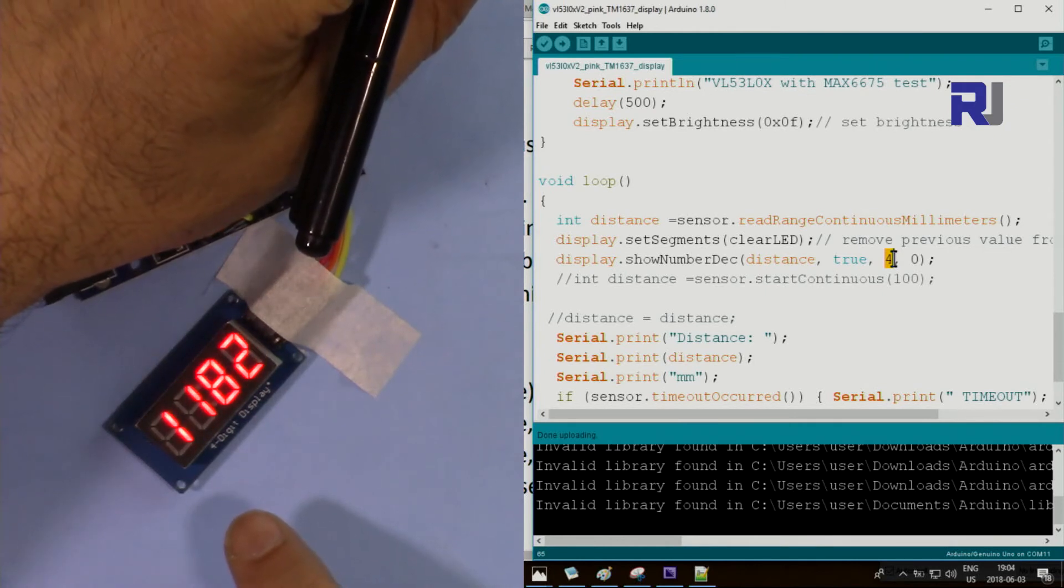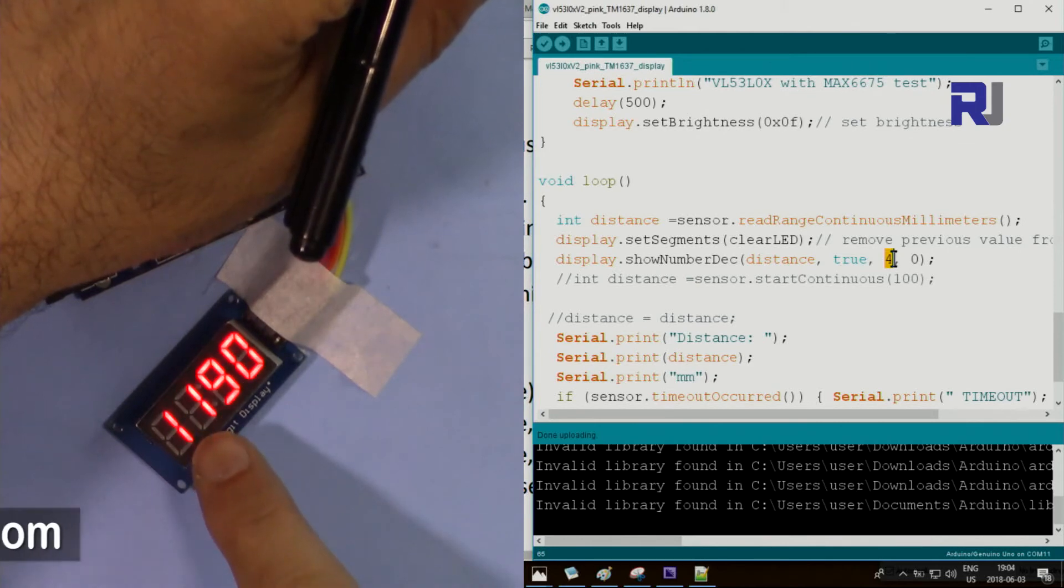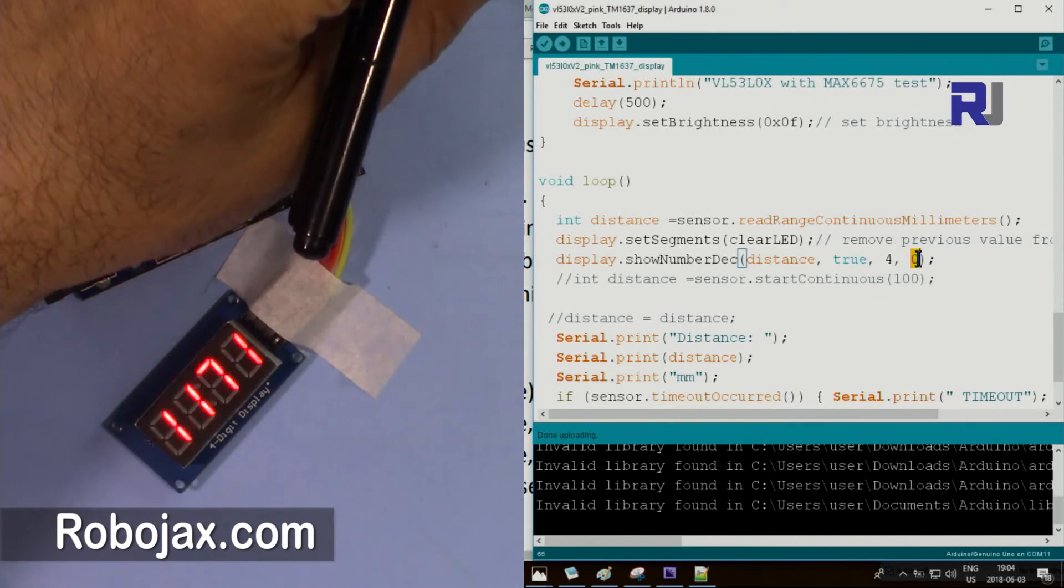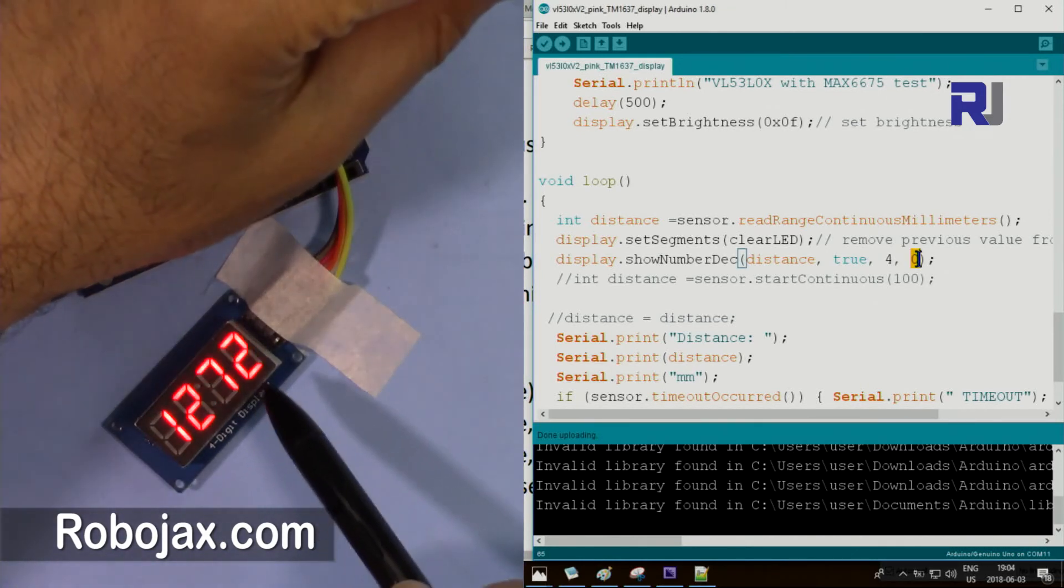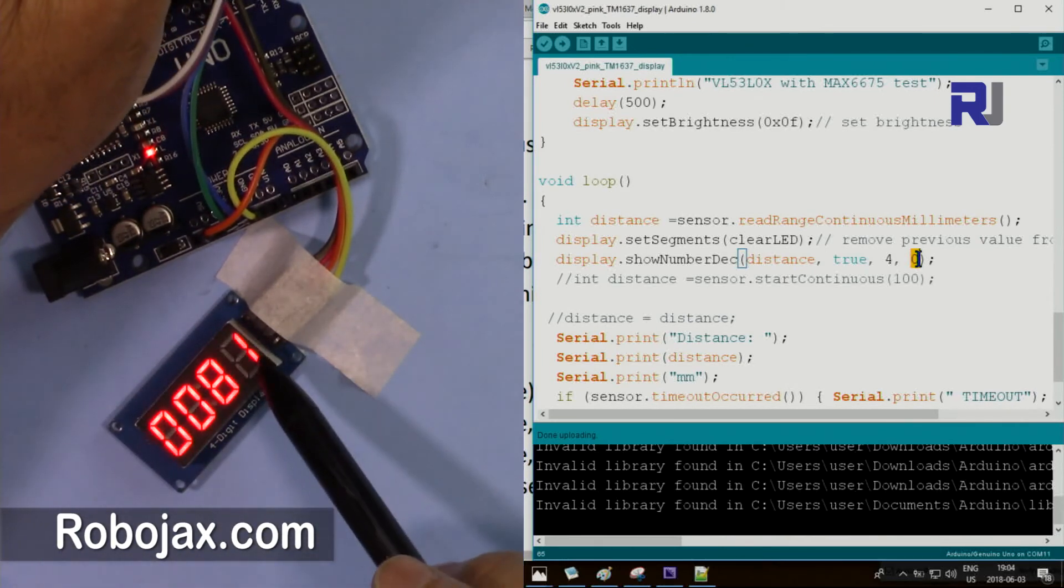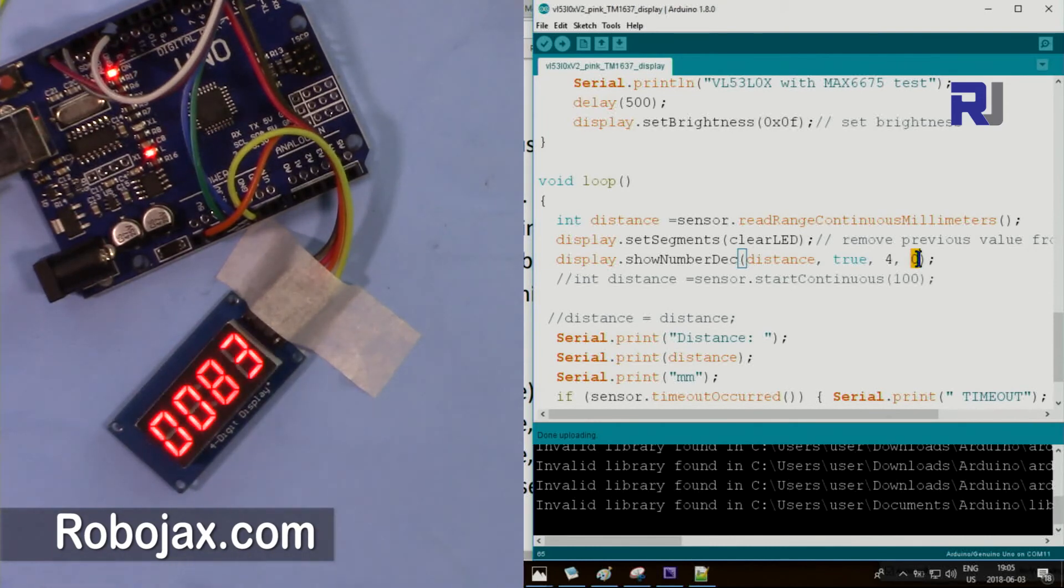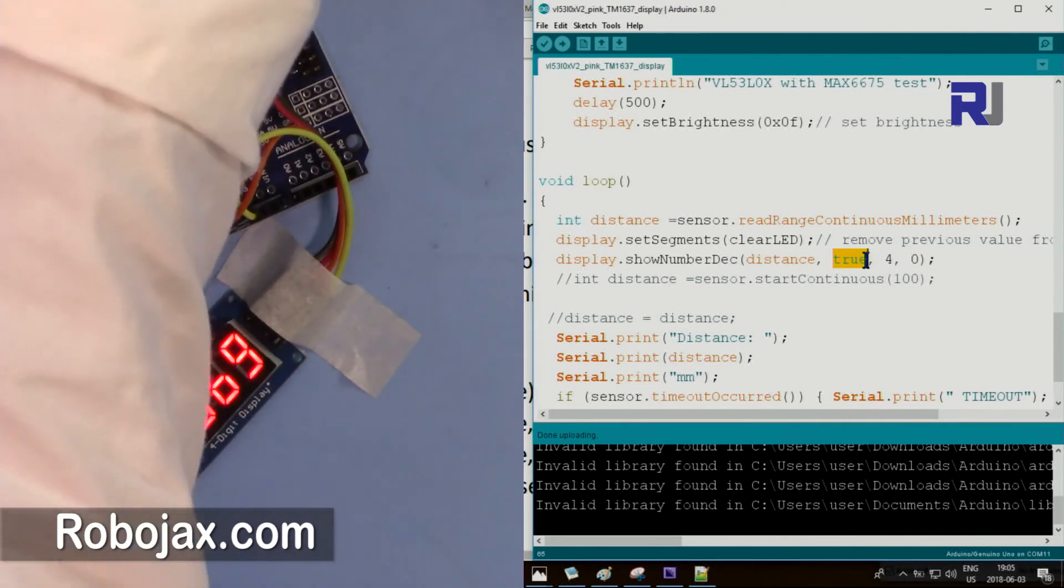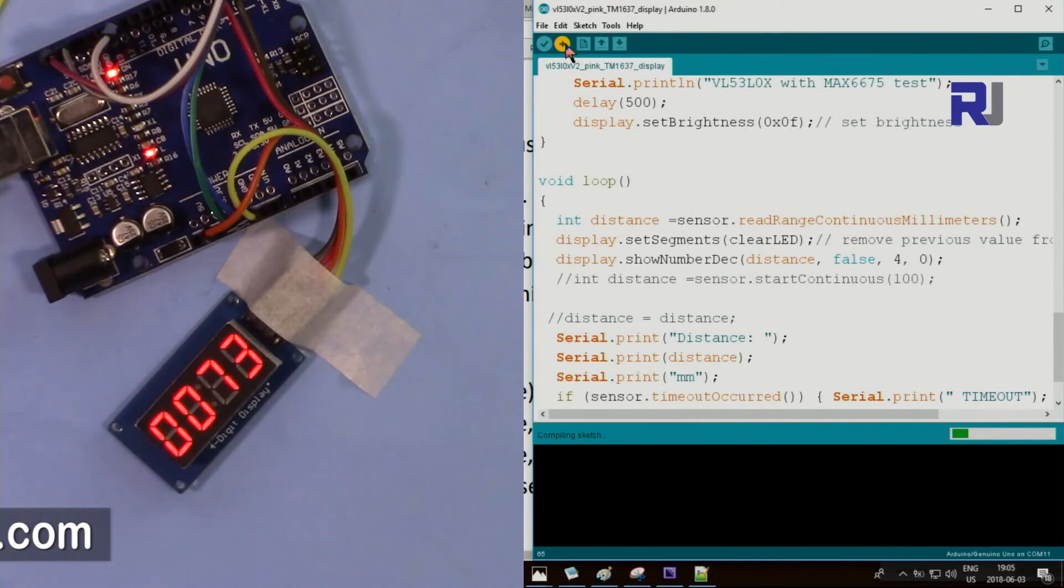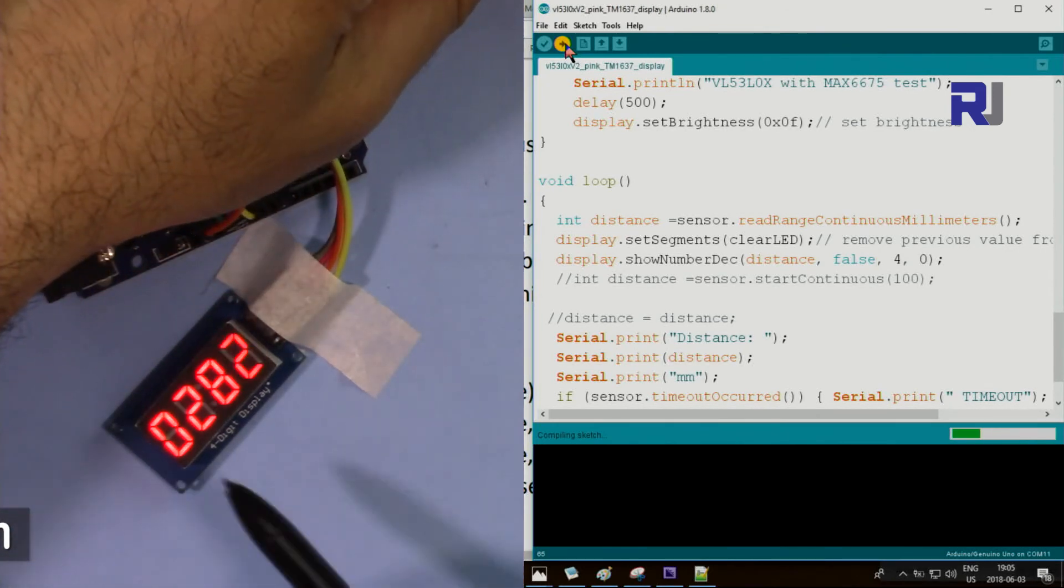This zero means which way should start - the least significant digit should be here or here. If you put the least significant digit here, the rest will be out, so we put it here. But if you want to make it false, the zero will disappear.